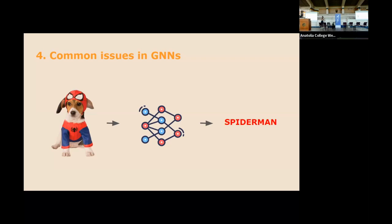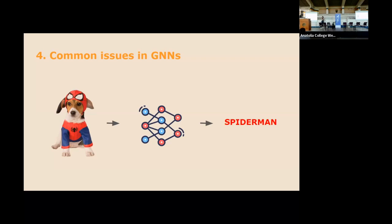Q: Are there situations where we want to maintain node ordering, i.e., not be permutation invariant — for example, in language where word position matters? A: Yes. In transformers for language, position is encoded with sinusoidal positional encodings. For graphs, when people apply transformers, they need positional encoding, and the eigenvectors of the graph Laplacian are most commonly used for this. This is an active area of research exploring smarter positional encodings for graphs.